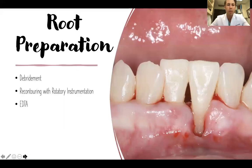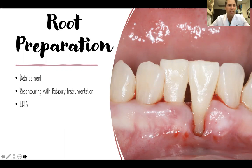Root preparation is key in any soft tissue augmentation or root coverage procedure. This involves thorough clinical debridement with hand and/or ultrasonic instrumentation, followed by root recontouring with rotary instrumentation to flatten the root surfaces and create a broad avascular surface. We then treat the roots with a chemical — in this case EDTA, a chelating agent which allows for connective tissue attachment.